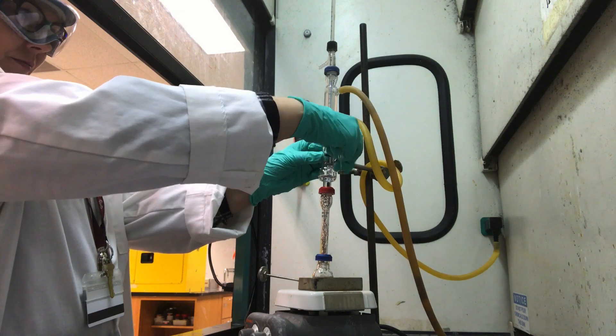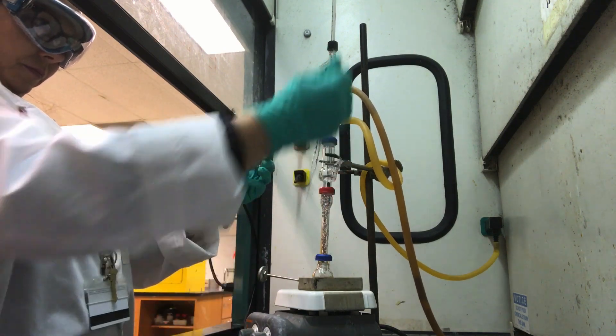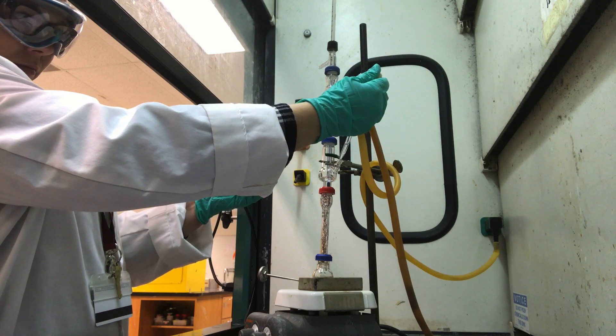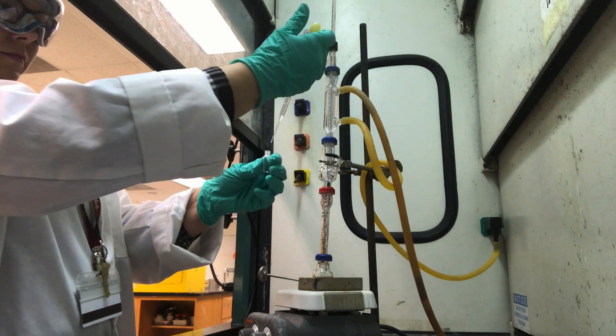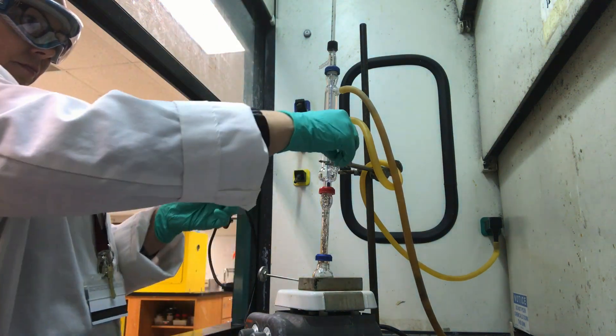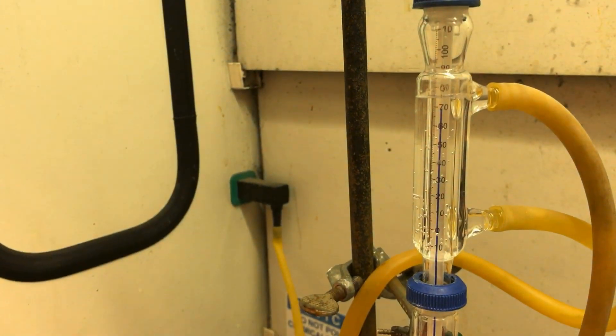The Hickman head holds a little over 1 milliliter of distillate. Once about 0.5 milliliters of distillate has collected in the Hickman head, record the temperature in your notebook, uncap the side pour of the Hickman head, and quickly transfer the contents of the reservoir with a pipette to a labeled vial.